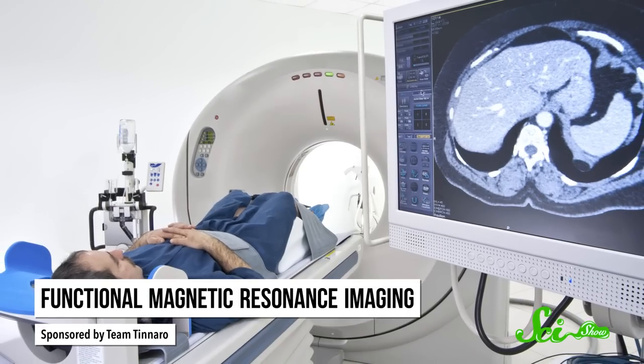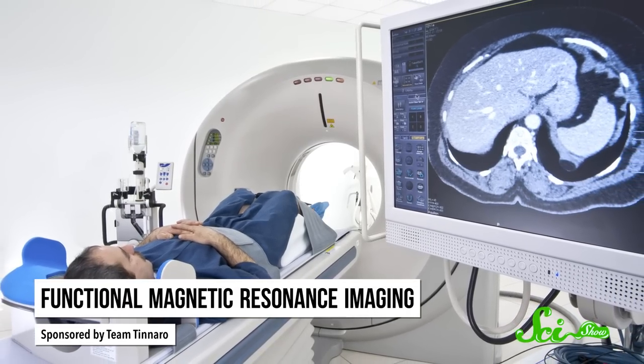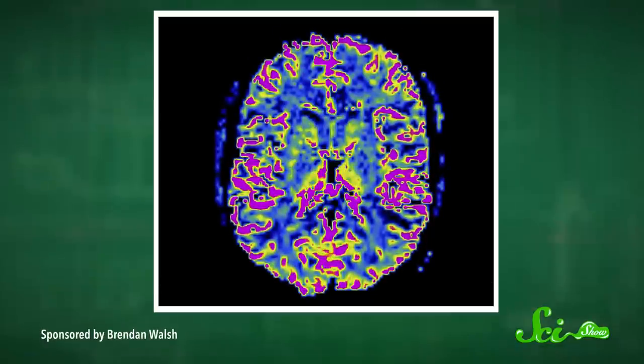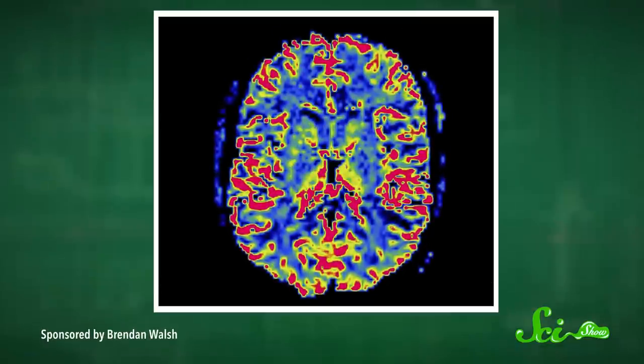The researchers analyzed a type of brain scan called functional magnetic resonance imaging, or fMRI. fMRI shows the parts of the brain that are active by tracking the flow of oxygenated blood through different regions. The blood brings oxygen and nutrients to the more active parts of the brain, and areas with more blood flow show up as bright webs on the scan.